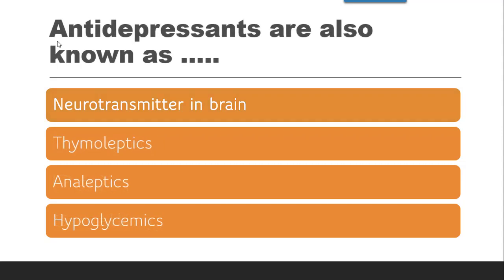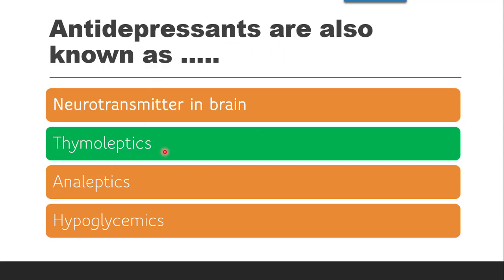The next question is: Antidepressants are also known as — whether it is neurotransmitter in the brain, thymoleptics, analeptics, or hypoglycemic. The correct answer is they are also called thymoleptics.